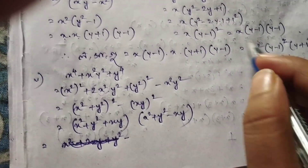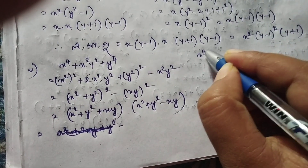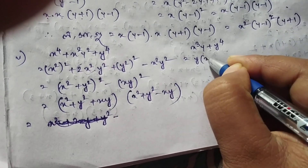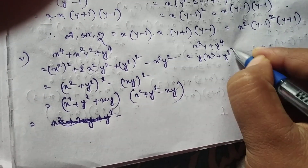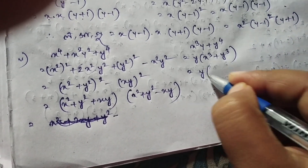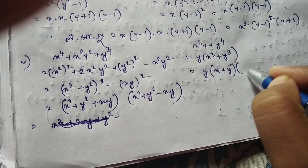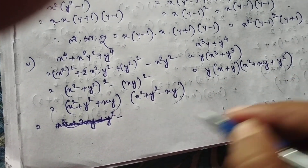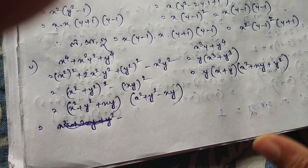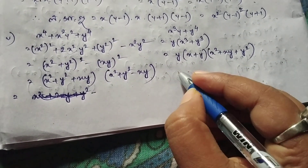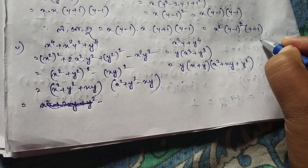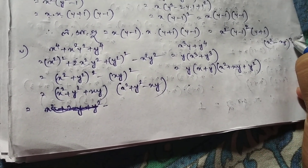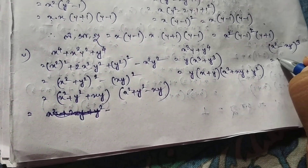Let's see. The other side is x squared. The other side is x squared. The other side is x squared. The other side is x squared, x squared. x squared minus xy, whole square.